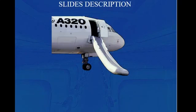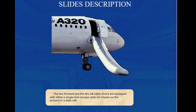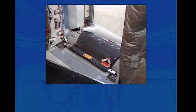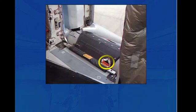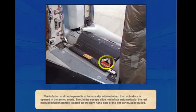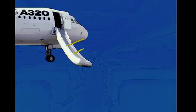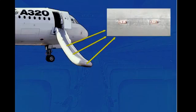The two forward and the two aft cabin doors are equipped with either a single lane escape slide, as shown on the picture, or a slide raft. The inflation and deployment is automatically initiated when the cabin door is opened in the armed mode. Should the escape slide not inflate automatically, the red manual inflation handle located on the right-hand side of the girt bar must be pulled. The slide is equipped with a lighting system supplied from the integral emergency power supply units. The lights are automatically supplied when the slide is deployed.